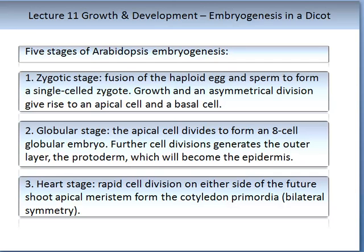Arabidopsis is a small plant used by many plant scientists as a model plant — a lot of time and research funds have been spent on identifying the components and physiology of this plant, which is then related to the rest of the plant kingdom. There are five stages of Arabidopsis embryogenesis. The first is the zygote stage, where the fusion of the haploid egg and sperm forms a single cell zygote, and growth with an asymmetric division gives rise to an apical cell and a basal cell. The second is the globular stage, where the apical cell divides to form an eight-celled globular embryo; further cell divisions generate the outer layer, the protoderm, which will then become the epidermis.